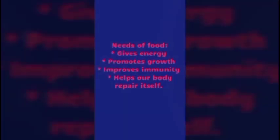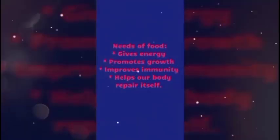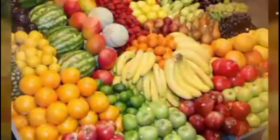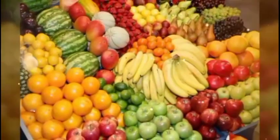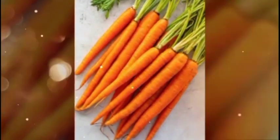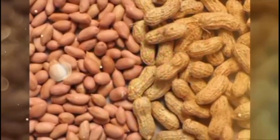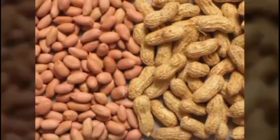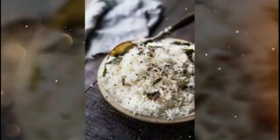Food gives energy, promotes growth, improves immunity, and helps our body repair itself. Food can be classified into two types: raw food and cooked food. Raw food is the food that does not have to be cooked to eat — for example, fruits, carrots, and groundnut seeds. Cooked food is the food that has been cooked to eat — for example, rice and vegetables.